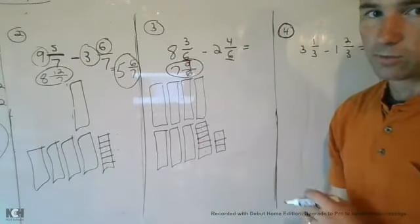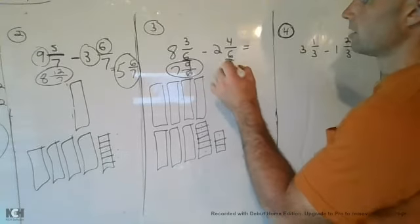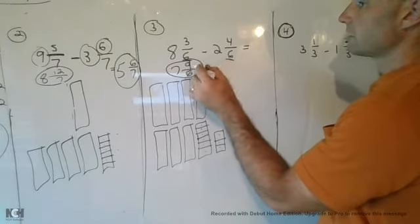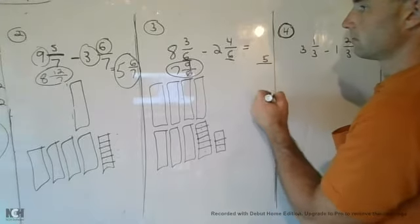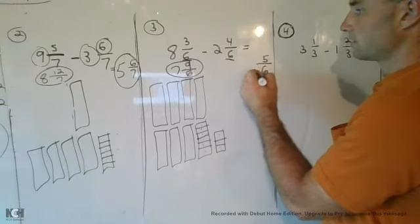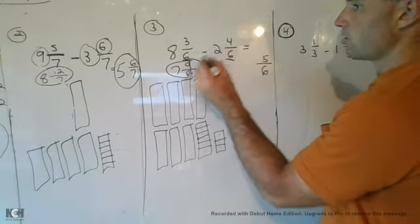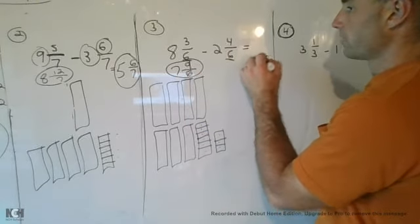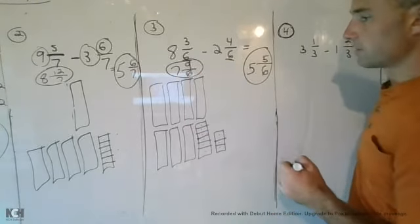Now I can go ahead and do some subtraction, which I hope you did. Hopefully you recognize I can take four away from nine. That gives me 5/6, and then I can take two away from seven to give me five. It's giving me the answer of 5 and 5/6.